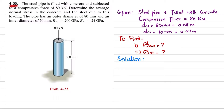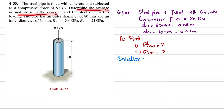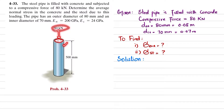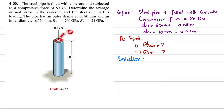Welcome back. Problem 4-33: a steel pipe is filled with concrete and subjected to a compressive force of 80 kilonewtons. Determine the average normal stress in the concrete and steel due to loading. The pipe has an outer diameter of 80 millimeters and inner diameter of 70 millimeters. E of steel is 200 gigapascals while E of concrete is 24 gigapascals.